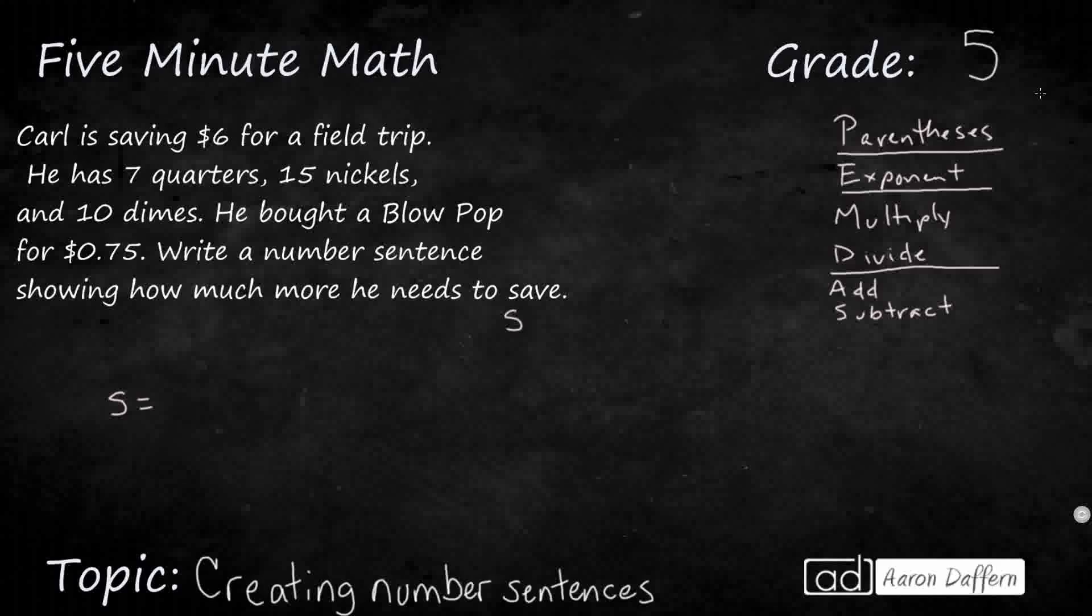What we need to do here is first, we know what that $6 is. That's what his goal is. He's trying to get $6, but he's got these quarters, these nickels, these dimes. So let's do a little bit with that. He has 7 quarters. So what do we know about 7 quarters? Well, if we wanted to find the value of 7 quarters, we can multiply 7 times its value, 25 cents.